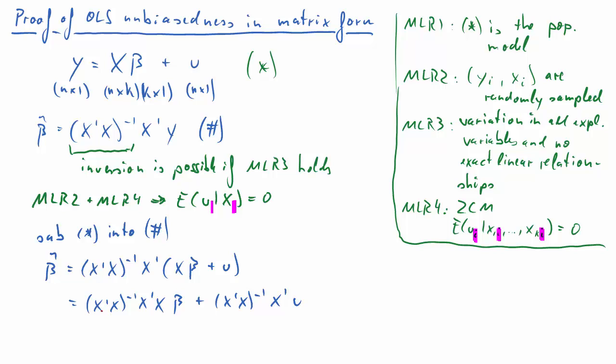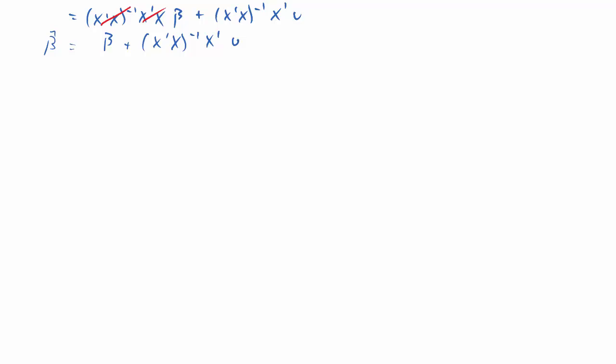The next step is to take the factor x prime x inverse x prime into the parenthesis. Now note that the very first factor is x prime x inverse times x prime x, and that will just cancel each other out. A matrix inverted times the matrix itself is the identity matrix. So, this is what we are left with.